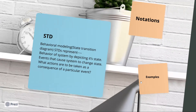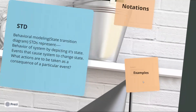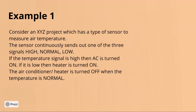How does this happen? This will be clear from examples. Let's move directly towards examples. Example number one: we are considering a project where we have put a sensor that will sense the temperature. The sensor will continuously sense temperature at three levels — checking whether the temperature is high, normal, or low.